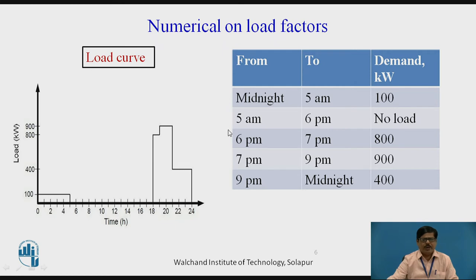Then from 5 AM to 6 PM, there is no load. So we have not plotted any line from 5 AM to 6 PM, that is 18 hours. Now from 6 PM to 7 PM, that is for 1 hour, the load was 800 KW. So here, from 18 to 19 hours, as you can see, the load shown is 800 KW.